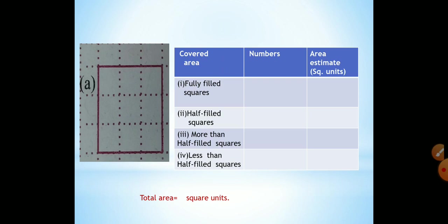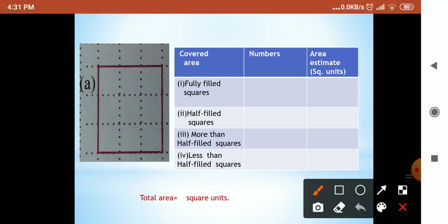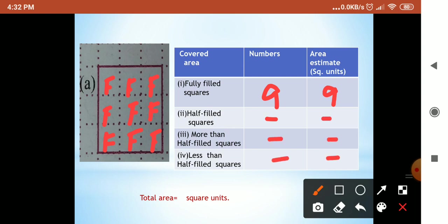Here, given the figure, we have to see which squares are fully filled. This was fully filled and this also fully filled. How many were fully filled? Nine. Here also nine. Half filled — nothing. More than half — not there. Less than half — not there. So totally the answer is nine square units.